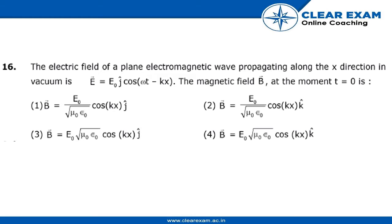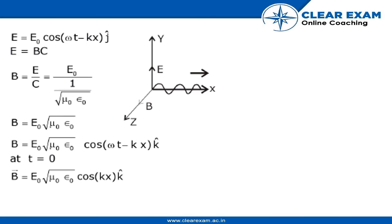This is a 3D graph with X, Y, and Z directions. E is the electric field and B is the magnetic field. The given equation is E = E₀ cos(ωt - kx) ĵ.